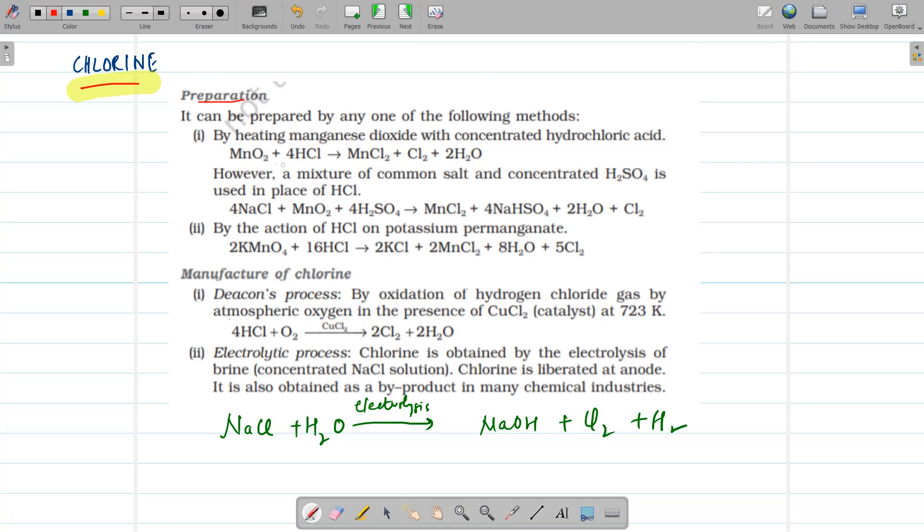First is, it can be prepared by heating manganese dioxide with concentrated HCl. Then also, we will get chlorine. However, mixture of common salt and H2SO4 could be also taken in place of HCl. Even then, chlorine is being liberated. It can also be formed by reacting KMnO4 with HCl. Then also, we get chlorine.